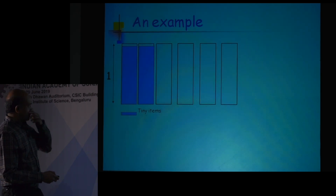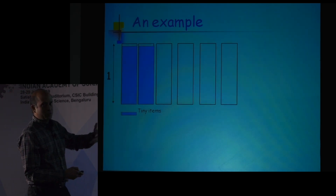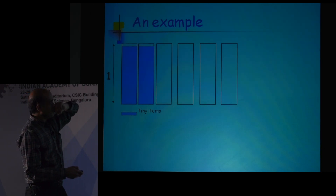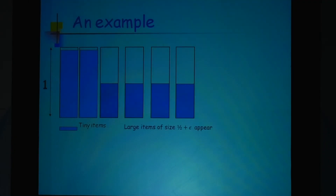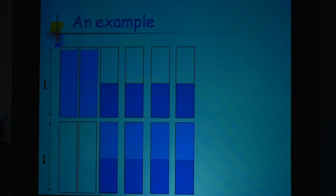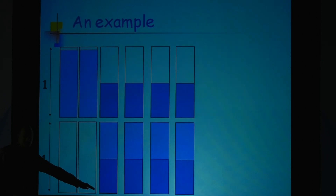Let me explain the main idea briefly. Going back to a first-fit kind of approach: initially a lot of tiny items arrive, you pack them in the first two bins, then somewhat larger items arrive and you pack those. Somebody who knows the future — and I am allowing you to repack, say moving each item once — might say: maybe I can move all of these and pack them like this, using four bins instead of six. You can do this because you can move each item once.